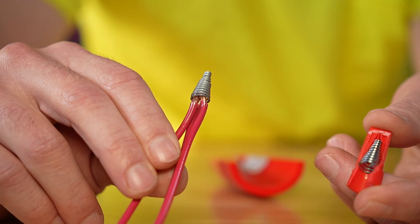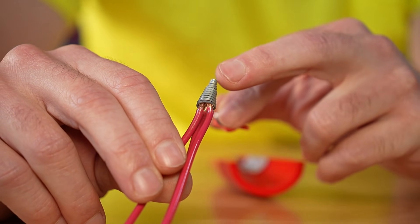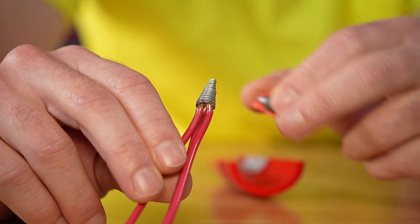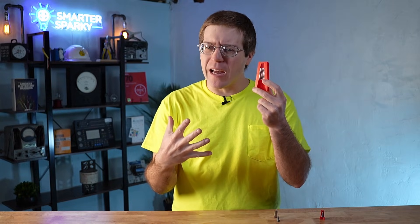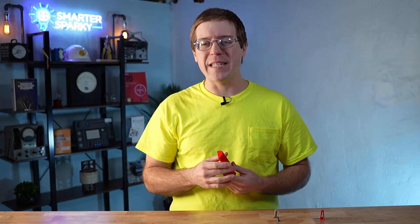When you twist a wire nut, it essentially threads this coil onto the wires which squeezes them together. This not only allows the wires to make electrical contact, but it also creates a solid mechanical connection, keeping the conductors from coming apart.